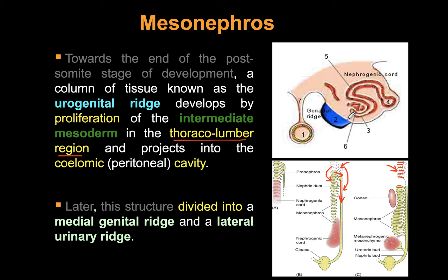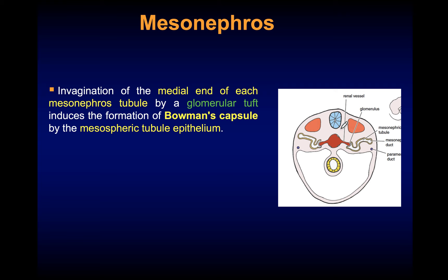Before mesonephric tubule development, the intermediate mesoderm proliferates in the thoracolumbar region and bulges into the coelomic cavity, forming the urogenital ridge. This ridge consists of two parts: the urinary ridge, which forms the mesonephros, and the gonadal ridge, which develops into the testes in males and the ovaries in females. The pronephros induces the intermediate mesoderm to form the mesonephric tubules.